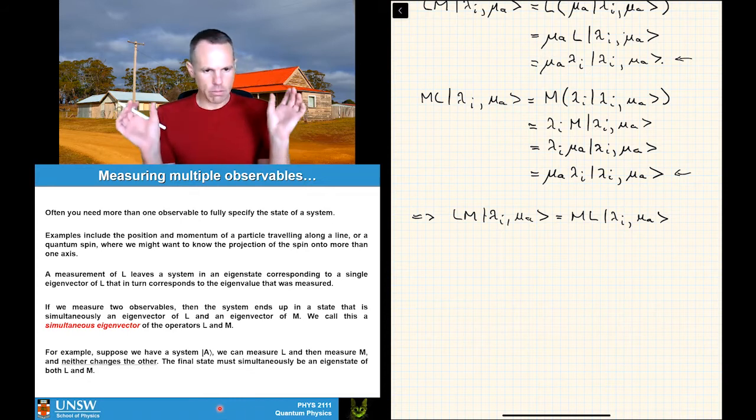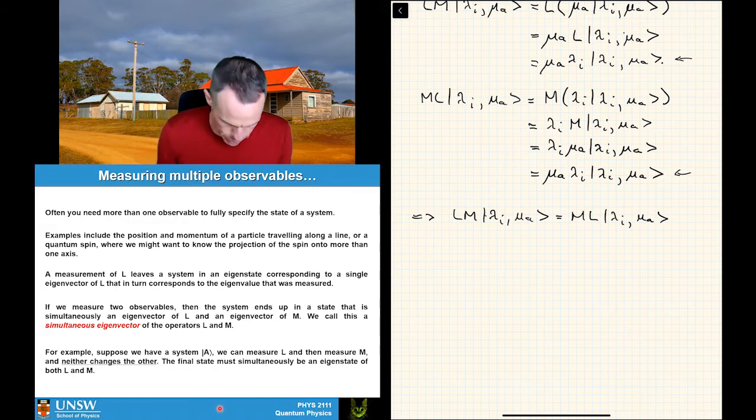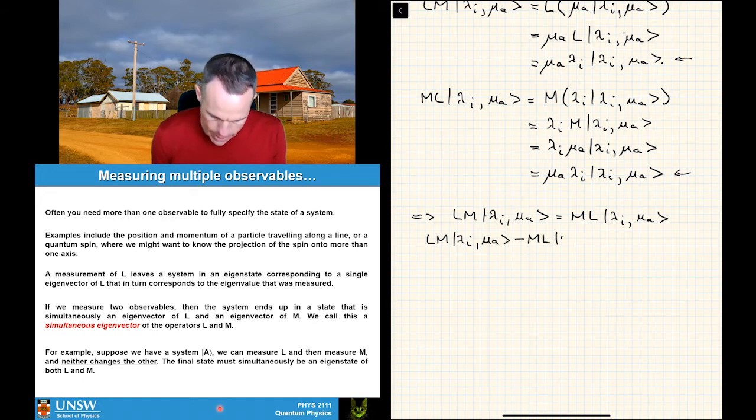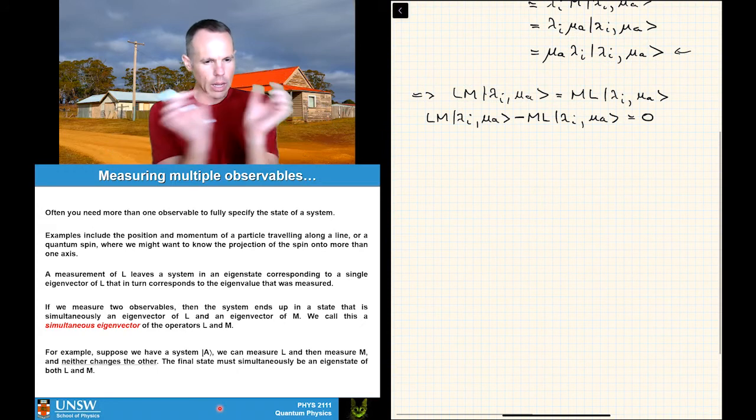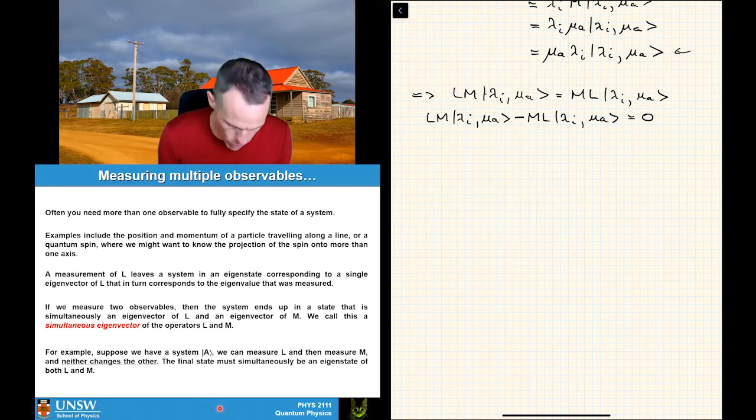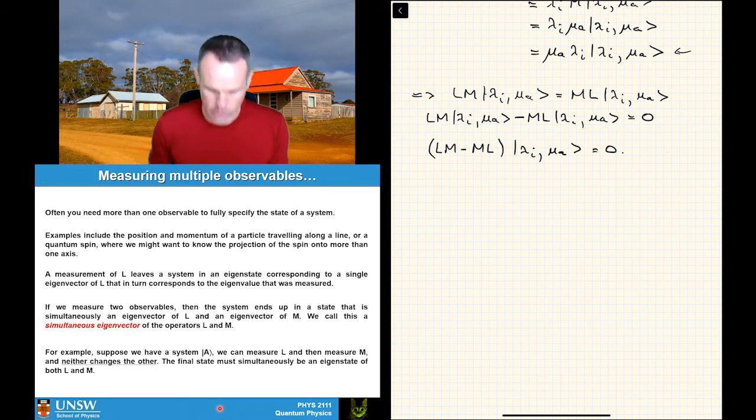So what this says in here is that this term here is equal to this term here and what it means working backwards is that we can say that L, M on the state lambda I, mu A will be equal to M, L acting on the state lambda I, mu A. We can subtract one of them from both sides to get an expression that looks like this. L, M, lambda I, mu A minus M, L, lambda I, mu A is equal to zero. And then we can cluster our terms together on the operators. So we can basically factor out the state. So what we would write here is L, M, minus M, L lambda I, mu A is equal to zero.